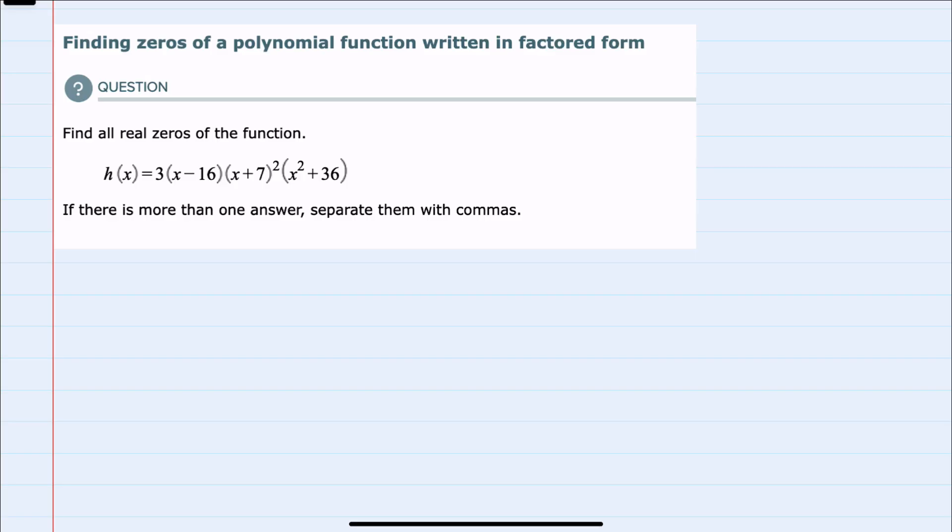We'll start by recalling that for all of our zeros, the y value, our h(x), will be zero. So I'll rewrite that as 0 = 3(x - 16)(x + 7)²(x² + 36).